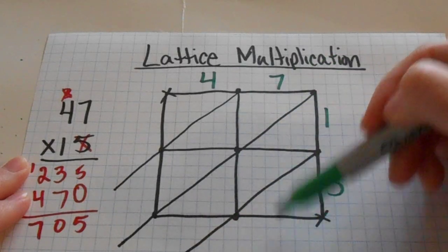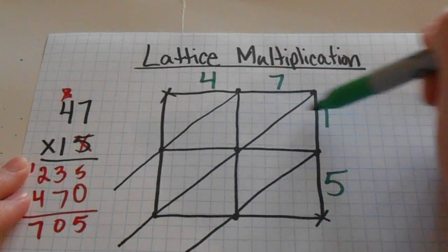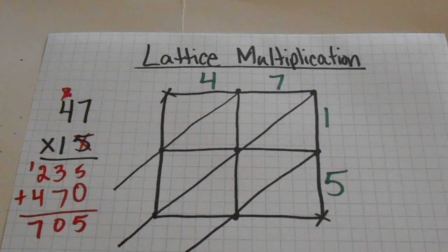You want your tens place to be over one column. Your ones place to be over the second column. And then the same for the sides. Tens place and ones place. All right. Now we get to multiply.